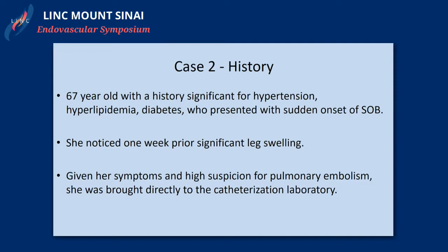Our second case is a 67-year-old patient with multiple comorbidities who presented with sudden onset of shortness of breath. She noticed prior to her symptoms that one of her legs was swollen. There was high suspicion of pulmonary embolism by our ER department, who, after getting an echocardiogram, decided to bypass the CT scan and send her directly to the cath lab. In our program at the Detroit Medical Center, we allow that flow — if the ER physician has high suspicion and a capable echo, they send the patient directly to the cath lab.